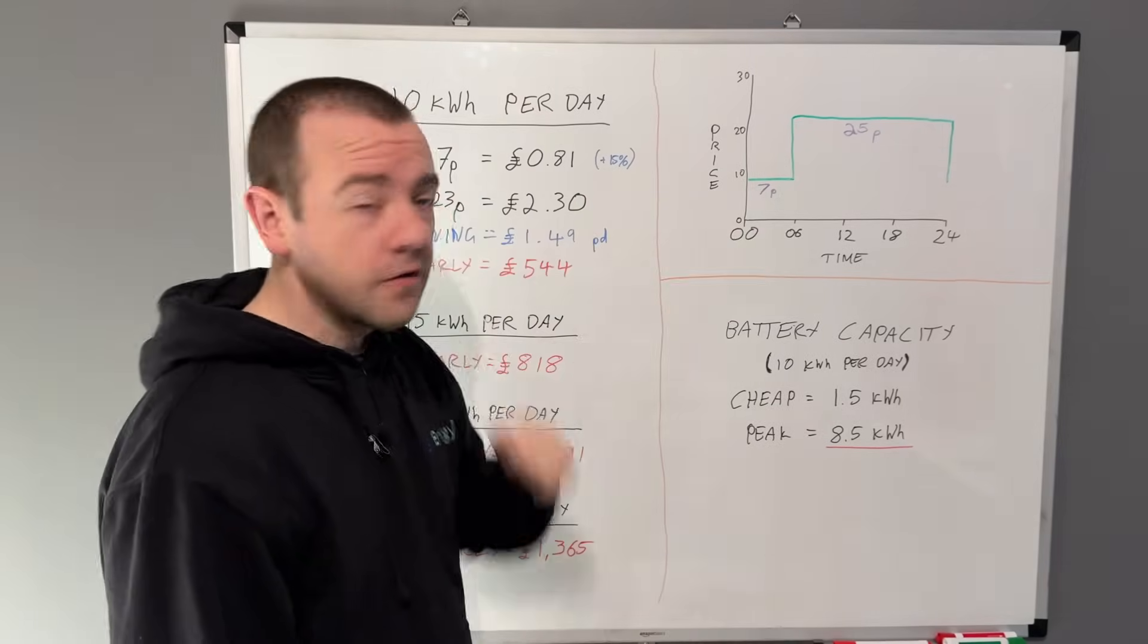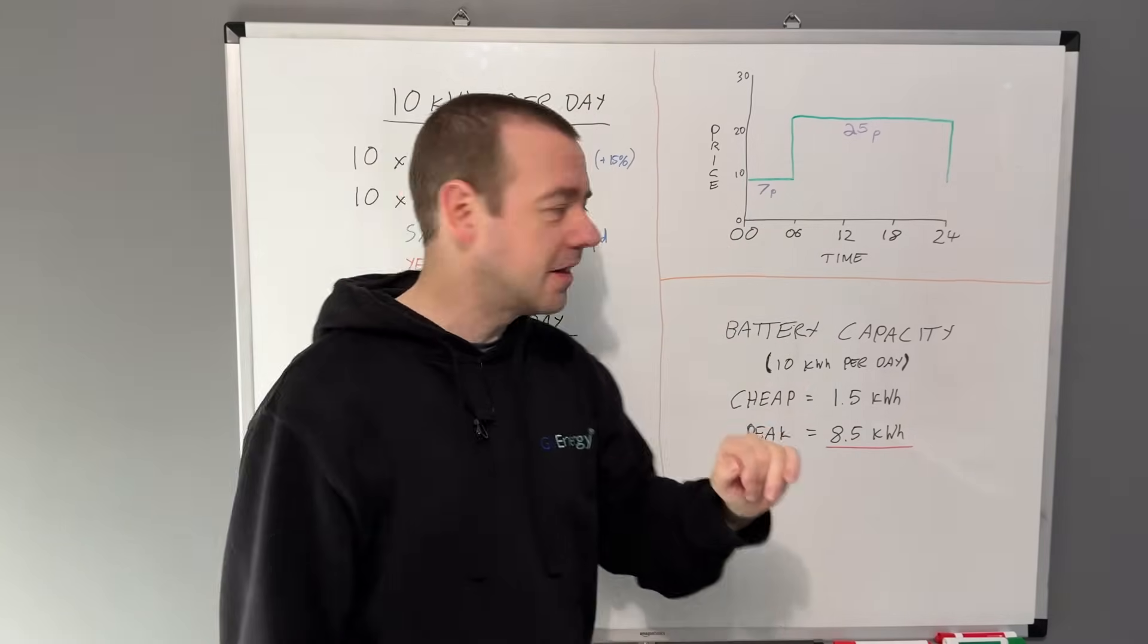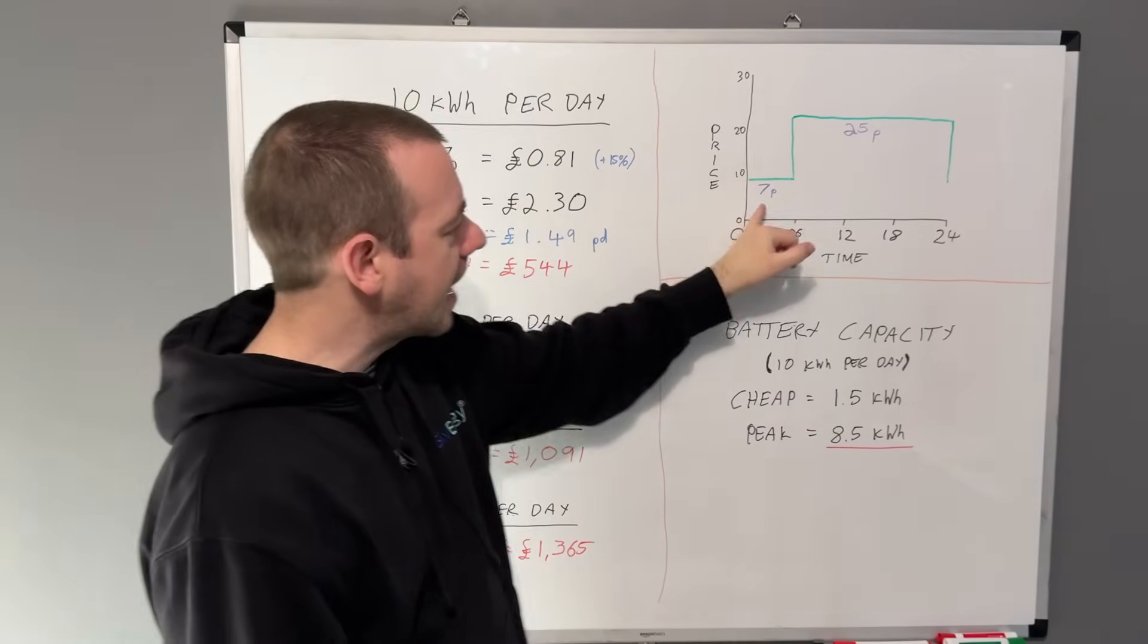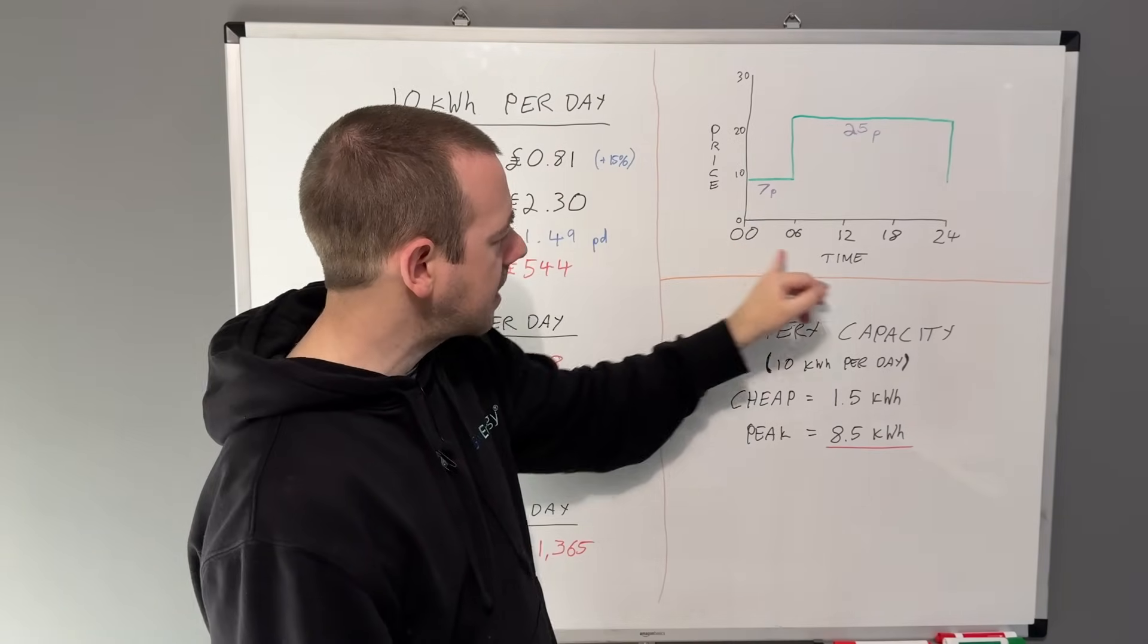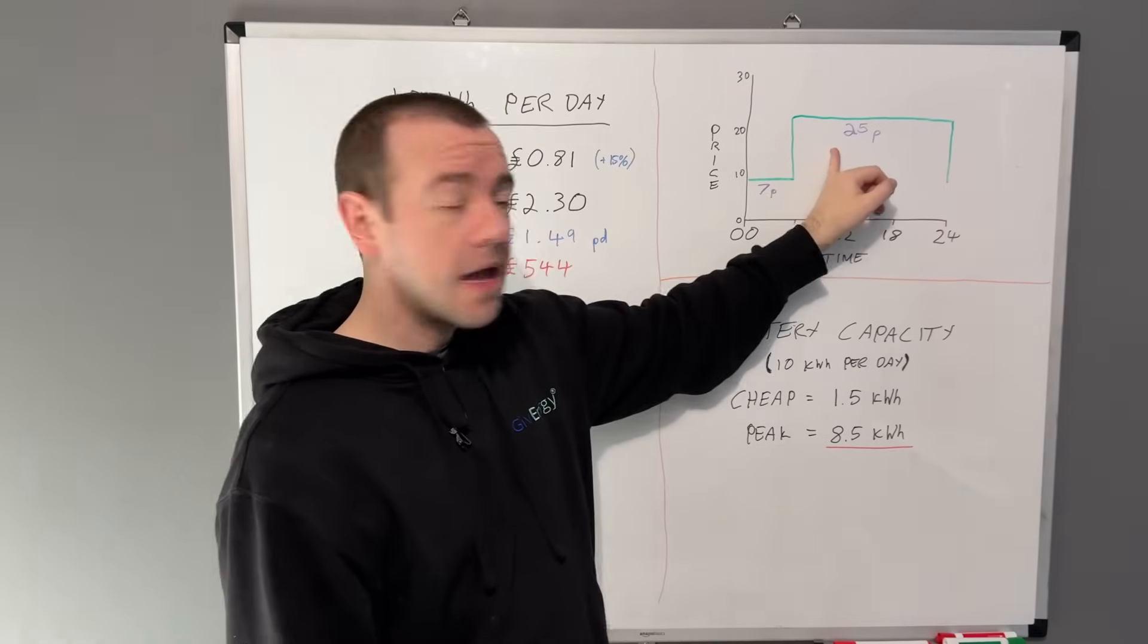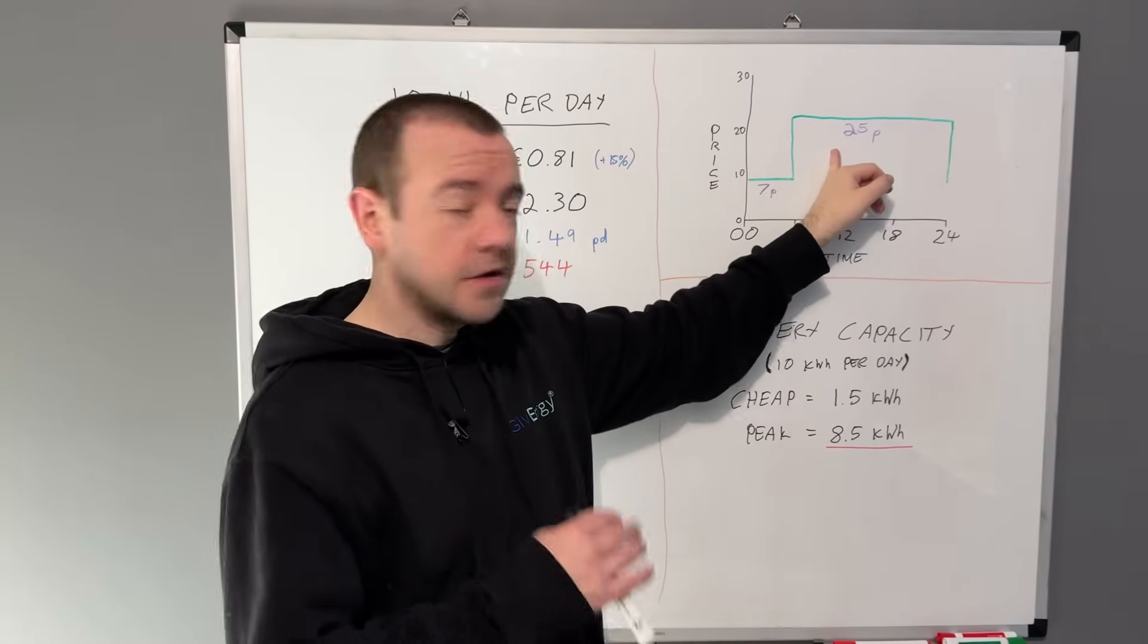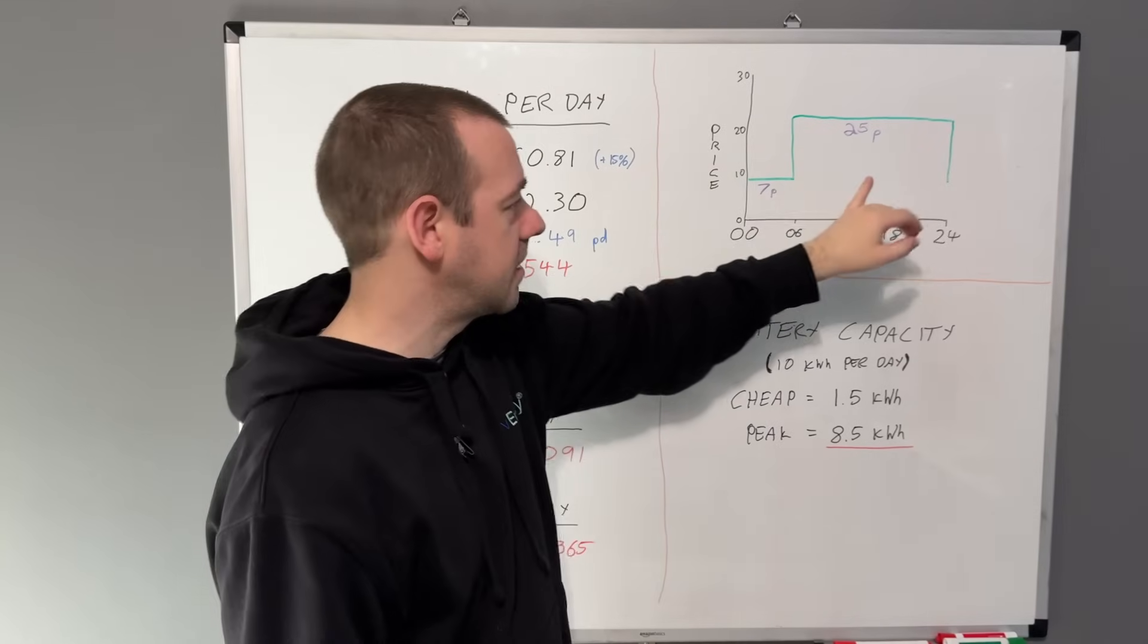So this is an example of the tariff that I'm on. I've changed the timing a little bit just to make the graph easier to understand, but essentially I pay 7 pence per kilowatt hour at night between midnight and 6am, and for the other 18 hours of the day I pay a little bit more than a cheap flat rate tariff would be, and that is 25 pence.